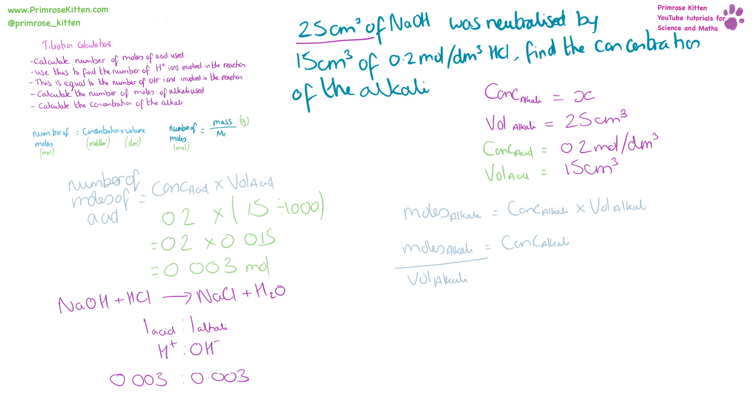Now we know the number of moles of alkali, we can use concentration equals moles divided by volume. So our moles from what we've just worked out is 0.003. Our volume is 25 centimeters cubed divided by 1,000 to get it in decimeters cubed. So that is going to be 0.003 divided by 0.025, giving us 0.12 moles per decimeter cubed as our concentration of alkali.